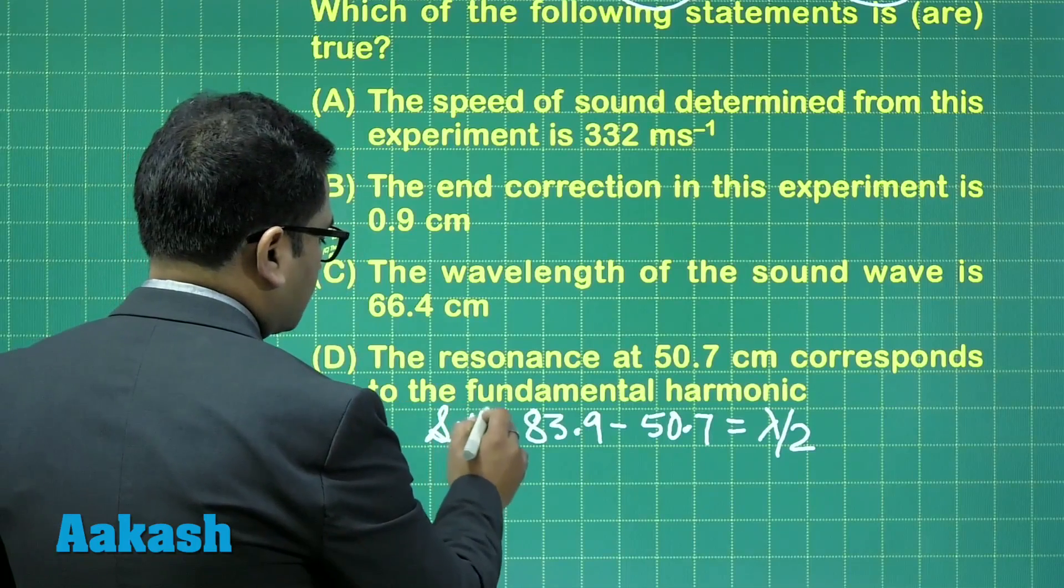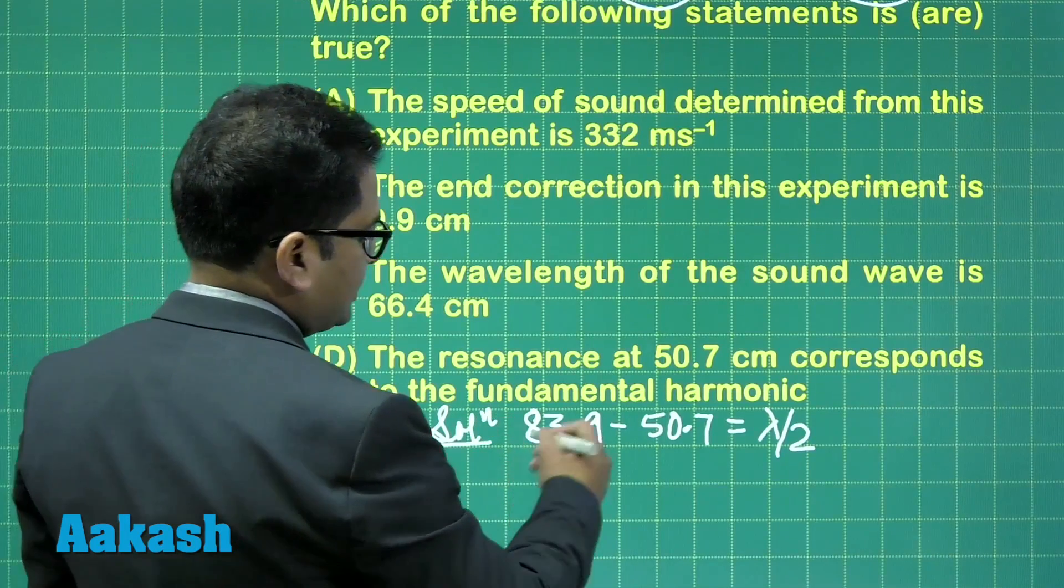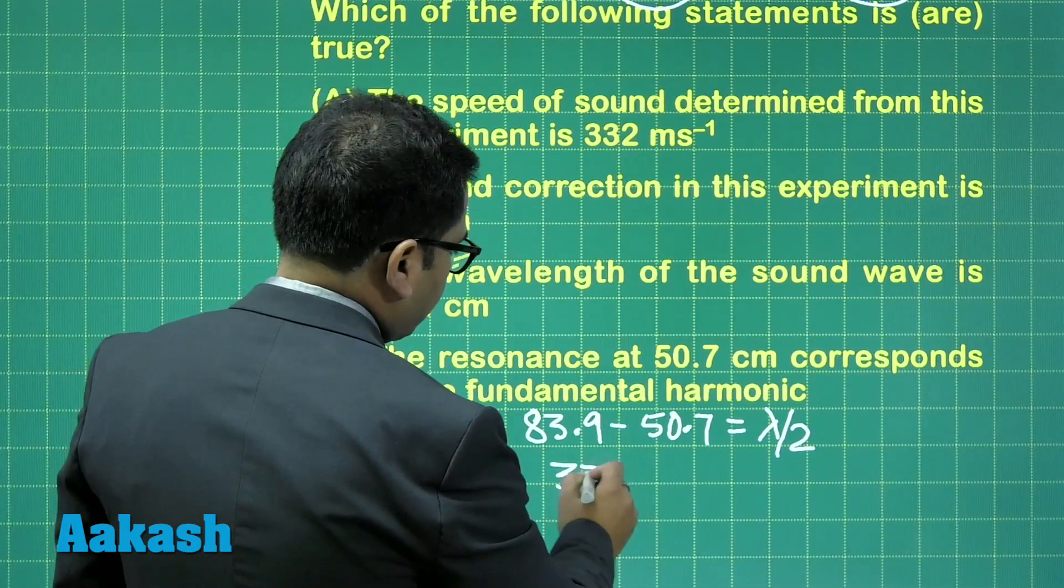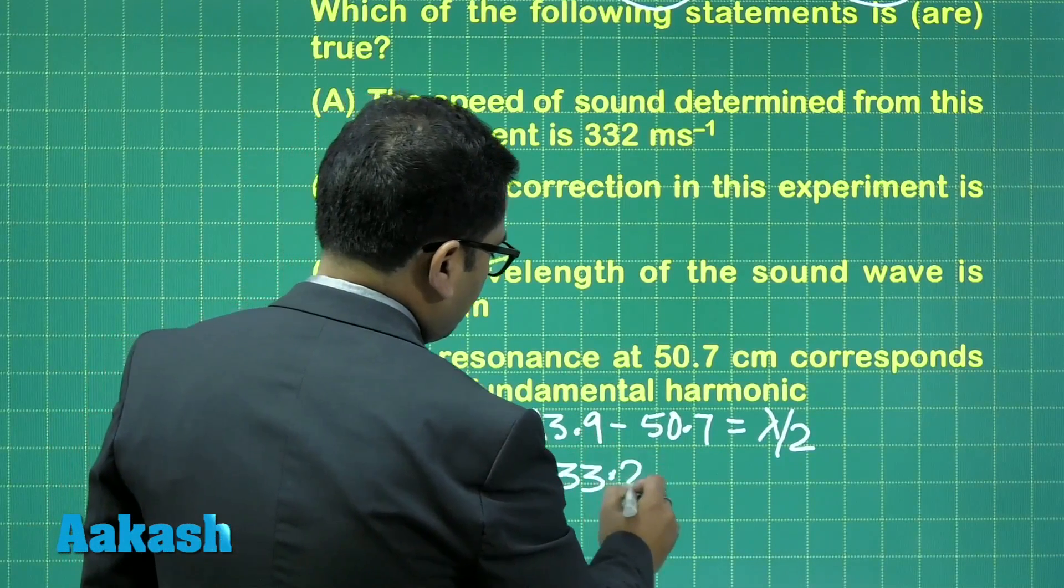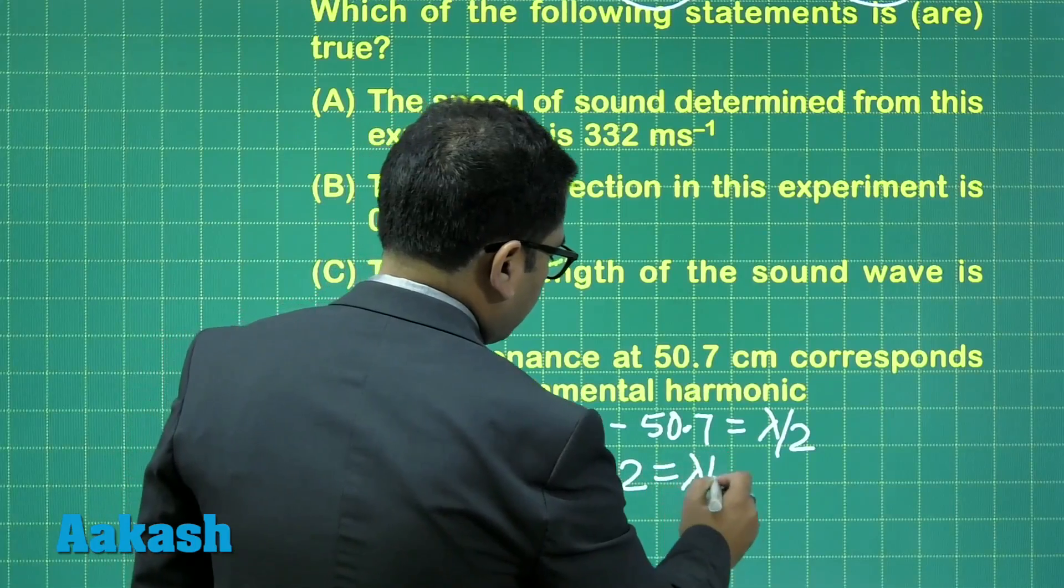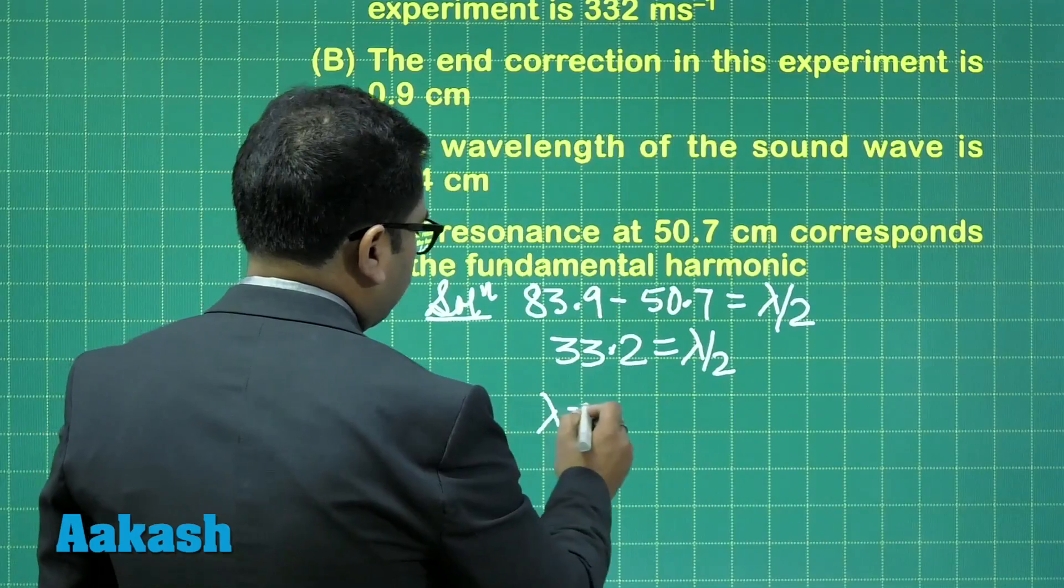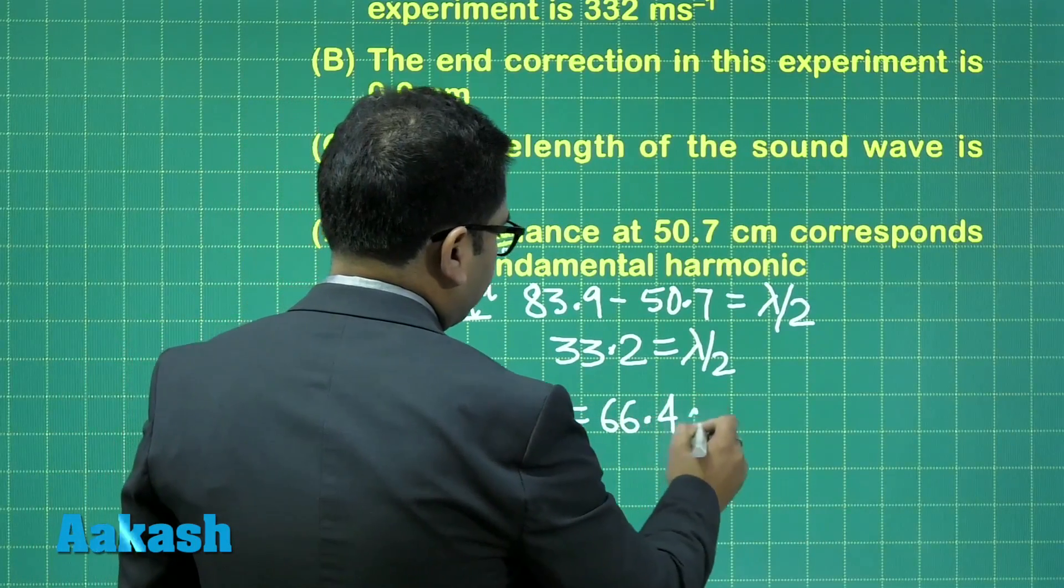Now, if this is the situation, let's try to calculate how much is the lambda. So, this is going to be 33.2 equals to lambda by 2. In other words, the value of lambda that I would be getting is 66.4 centimeters.